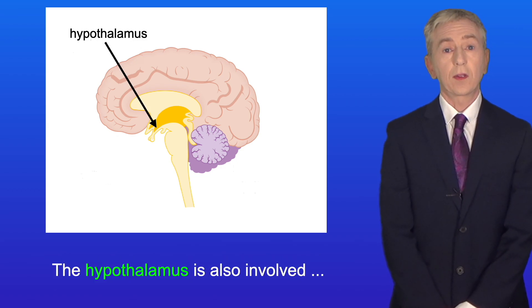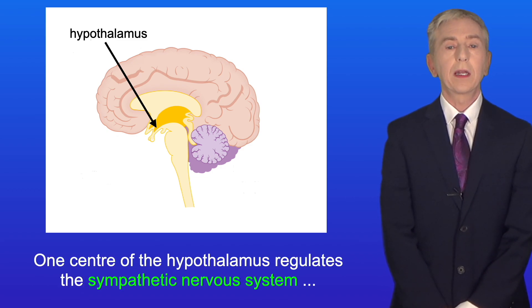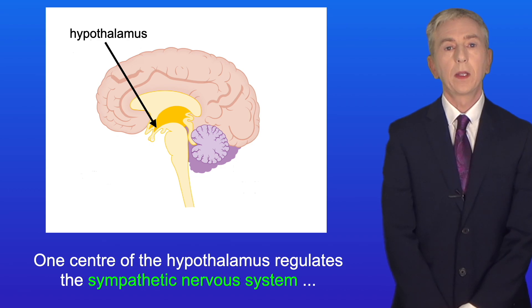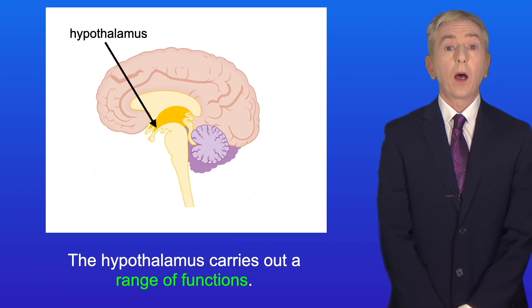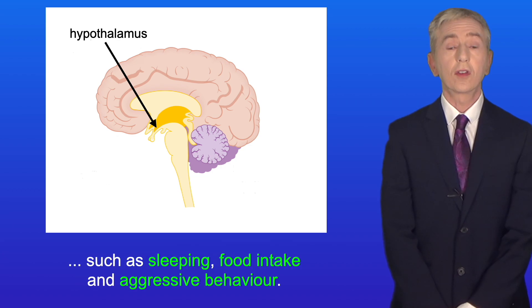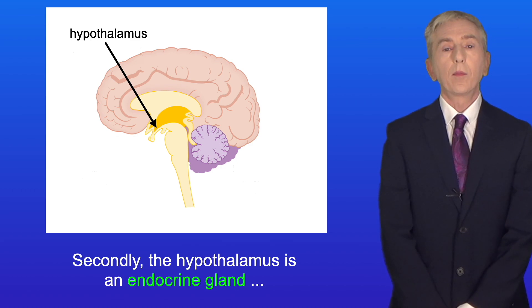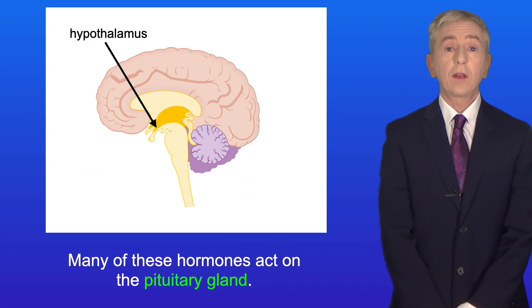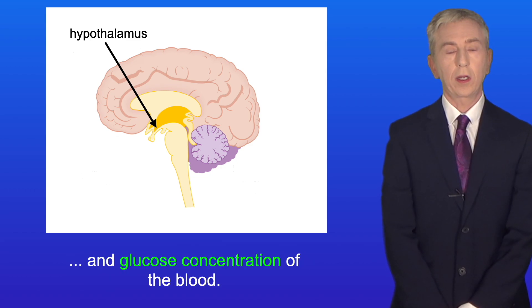The hypothalamus is also involved in regulating the autonomic nervous system. One center regulates the sympathetic nervous system and the other regulates the parasympathetic nervous system. The hypothalamus controls behavior patterns such as sleeping, food intake, and aggressive behavior. It is also an endocrine gland, producing a number of different hormones — many of which act on the pituitary gland. Lastly, the hypothalamus detects changes in the water potential and glucose concentration of the blood.